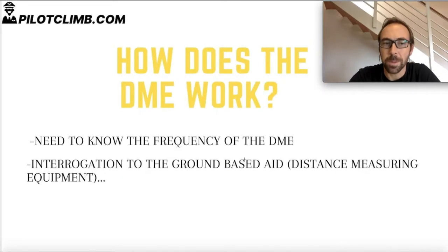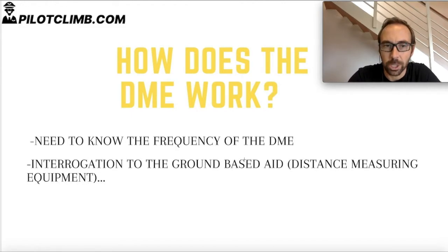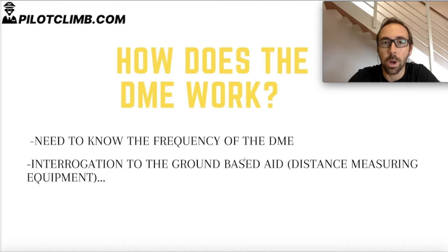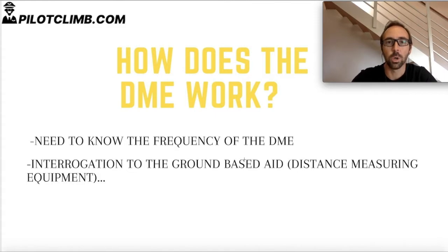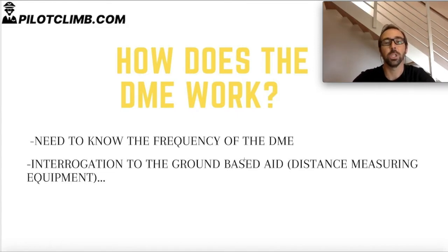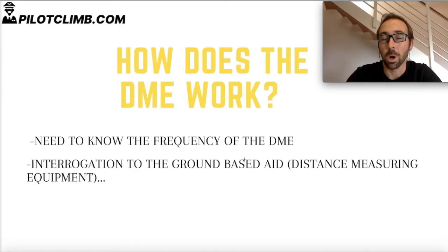How does the DME work? We need to know the frequency of the DME, because each DME has an associated frequency. It's very important to take care when selecting the frequency, because if you select the wrong frequency of the wrong DME, you're going to get distance information about the wrong station. Normally DMEs are collocated with the airport, so if you select the DME of your destination airport you will know how far you are from that airport. If you select the wrong one, you get distance information about the wrong airport or wrong DME ground station.